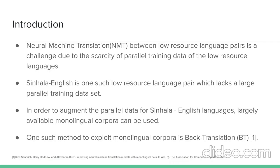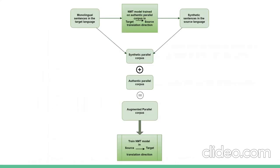To augment parallel data for low-resource language pairs, a largely available monolingual corpus can be used. One such method of data augmentation is back-translation — the process of translating target-side monolingual data using an already trained MT system in the target-to-source direction, combining the generated synthetic source sentences with the monolingual target sentences to produce a synthetic parallel corpus. This is then combined with authentic parallel data to create an augmented corpus for training the forward translation system.